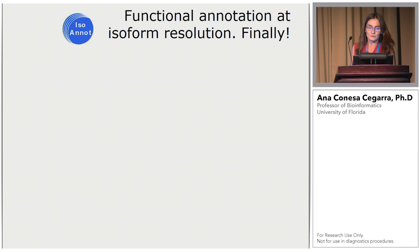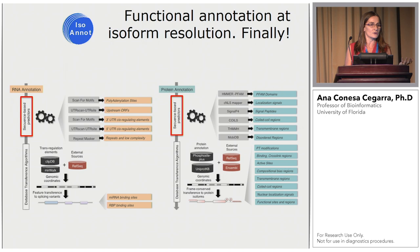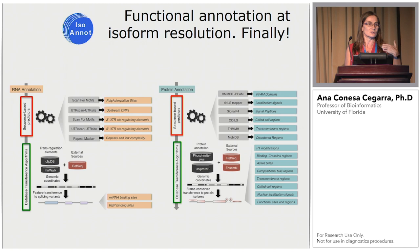The next development is IsoAnnot. Basically what we have been doing here is generating a pipeline that produces a lot of functional labels, both at the coding part of the transcripts and at the non-coding part. We do this by combining a number of algorithms and databases, containing both methods for sequence-based prediction — for example, motifs in UTRs, repeated regions, PFAM domains, localization signals — but also transference of annotations from genome coordinates. With that, for example, we can annotate post-translational modifications and microRNA binding sites, among other features.